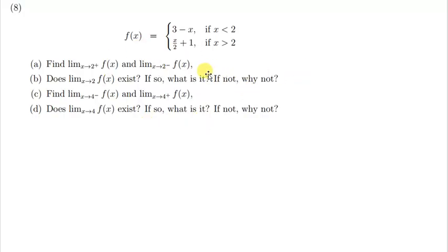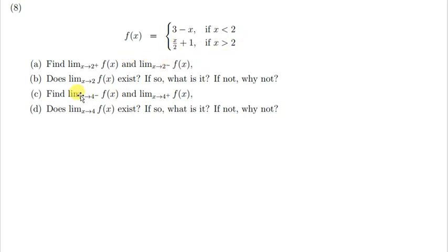Alright, let's quickly do the question. The question says f of x is equal to 3 minus x if x is less than 2, and x over 2 plus 1 if x is greater than 2. Find the limit of f of x as x is approaching the positive side of 2, and as x is approaching the negative side of 2.